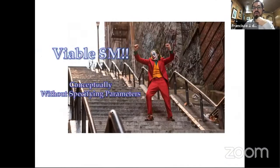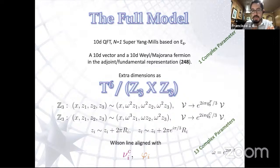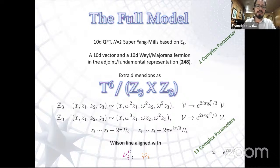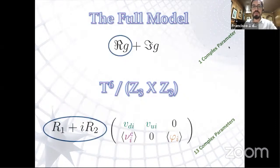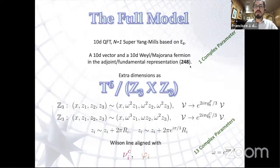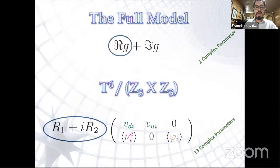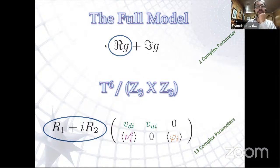Even without specifying parameters we can draw important conclusions. First, quarks receive masses at leading order but leptons do not, so there is a natural hierarchy: quarks are heavier than leptons. Second, quarks need three steps to fill the mass matrix — hierarchical mixing, meaning small CKM mixing. Third, leptons appear at one step so all entries are of similar order — large mixing, consistent with the PMNS matrix. Fourth, we have six right-handed neutrinos with large Majorana masses, giving the seesaw mechanism and small neutrino masses. This is a very viable Standard Model setup.